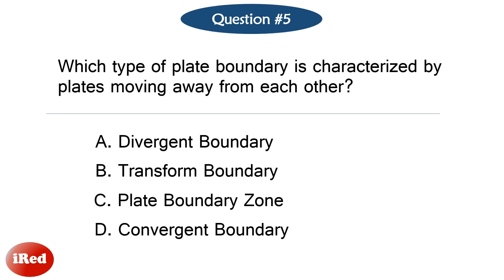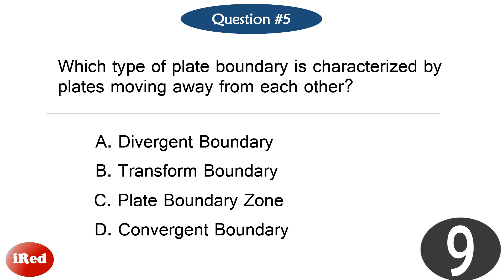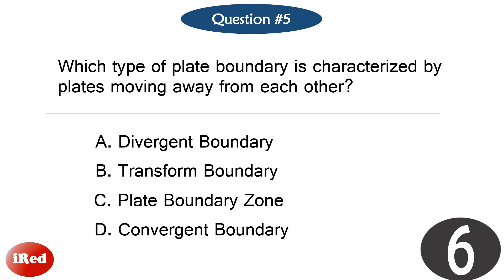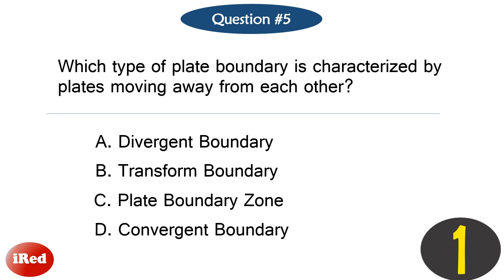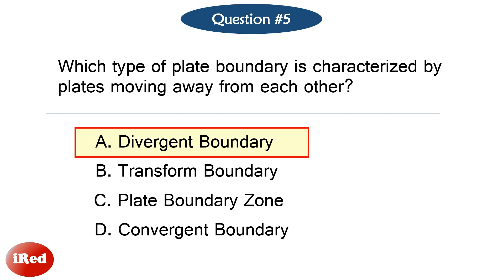Question number five. Which type of plate boundary is characterized by plates moving away from each other? The correct answer is letter A: divergent boundary.